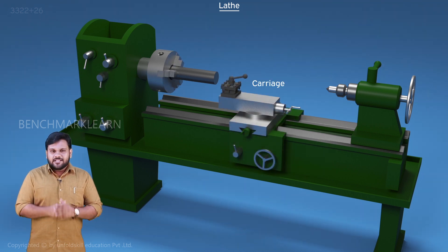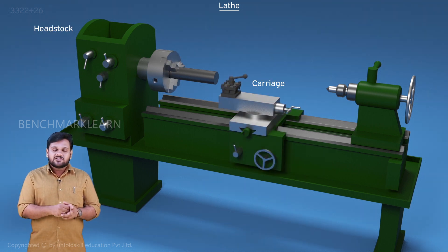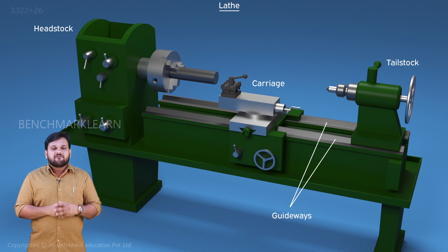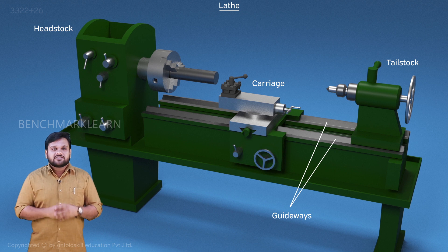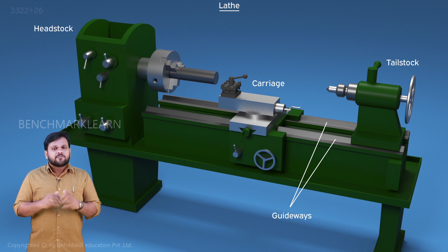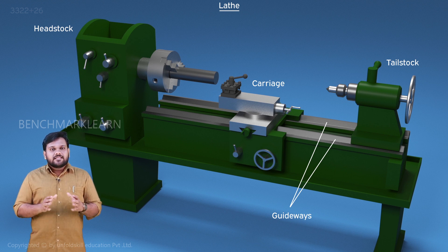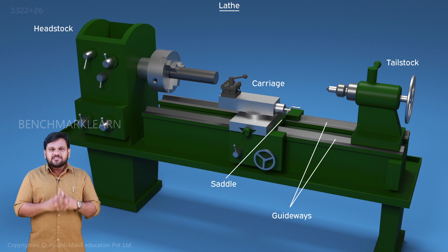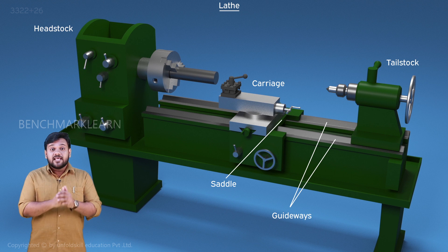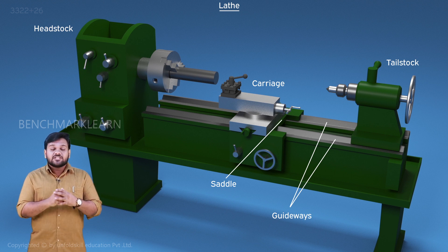The carriage is mounted between the headstock and tailstock. It moves the tool along the guideways parallel to the axis of rotation. The carriage has several parts that hold and control the motion of the tool. The base of the carriage is called the saddle — it slides along the guideways on the top of the bed and has an H-shape.